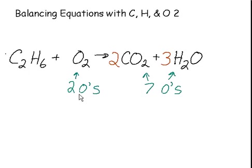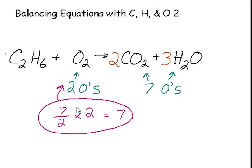There's no integer we can multiply two by in order to get seven. So we look at a fraction right here. It's known that seven over two times two is equal to seven. We simply cancel out this two and this two. So we put the coefficient seven over two right in front of the oxygen.